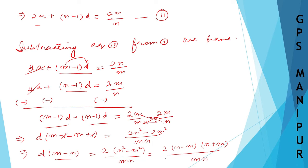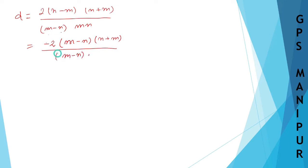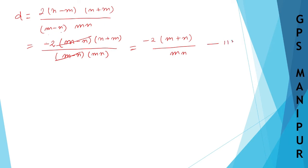Factoring the right side: n²−m² = (n−m)(n+m). So d(m−n) = 2(n−m)(n+m)/mn. Since (n−m) = −(m−n), the (m−n) terms cancel, giving d = −2(m+n)/mn. This is Equation 3.